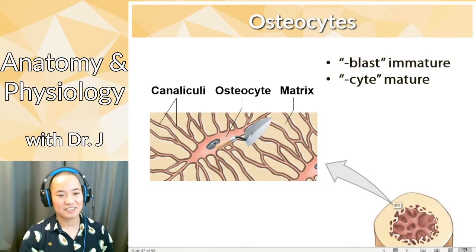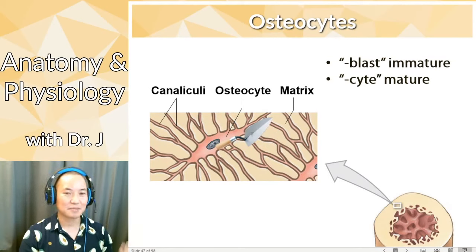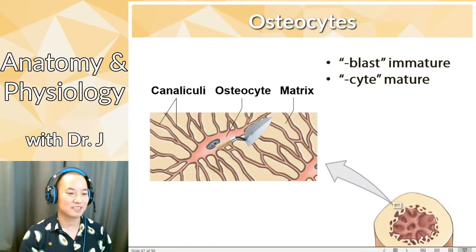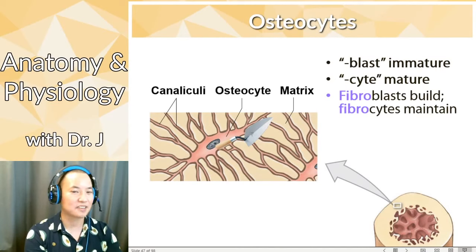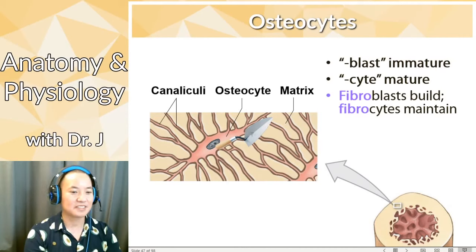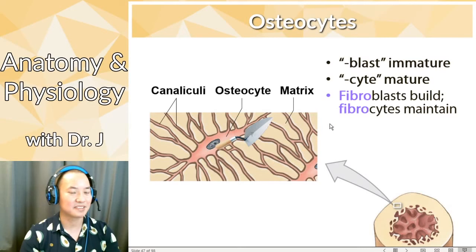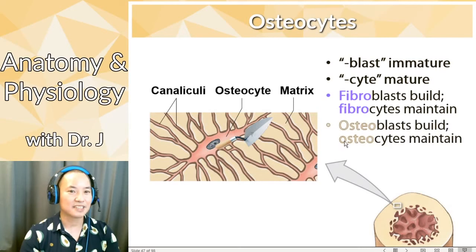It's very similar to fibroblasts versus fibrocytes — fibroblasts secrete all those collagen and elastin fibers, whereas fibrocytes are more about maintenance. Same with osteoblasts and osteocytes: osteoblasts build, osteocytes maintain.